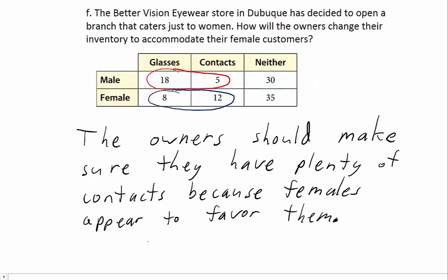Question F: The Better Vision Eyewear store in Dubuque has decided to open a branch that caters just to women. How will the owners change their inventory to accommodate their female customers? The males in the survey tended to favor glasses over contacts, while the females tended to favor contacts over glasses. So the owners should make sure they have plenty of contacts, because females appear to favor them.